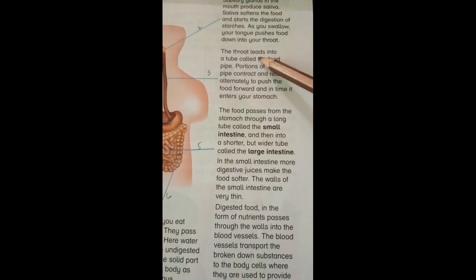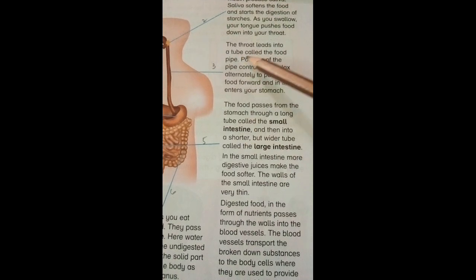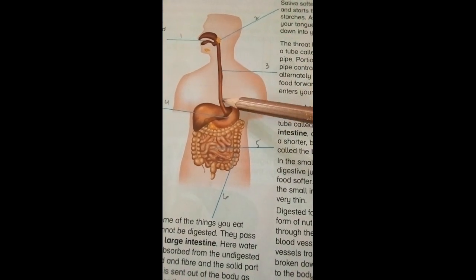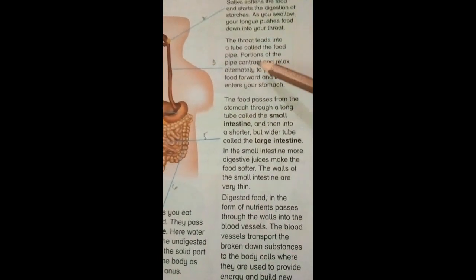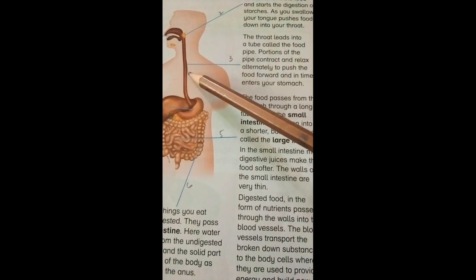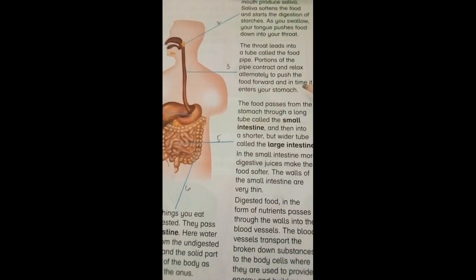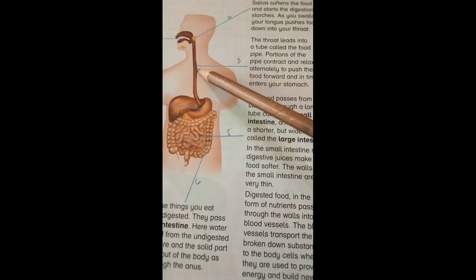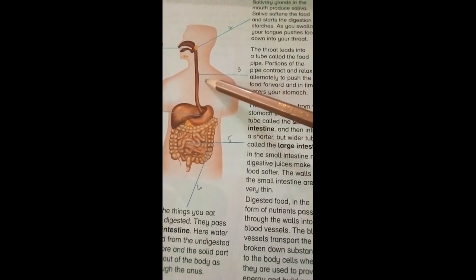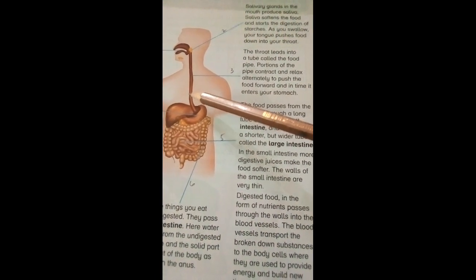The third part is the throat. The throat leads into a tube called the food pipe or windpipe. Portions of the pipe contract and relax alternately, just like a pump, to push the food forward until it enters your stomach. This tube contracts and relaxes alternately to push the food from mouth to throat, through the tube, and then to the stomach.